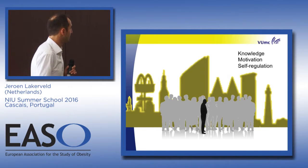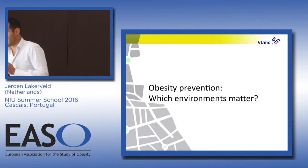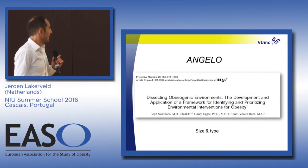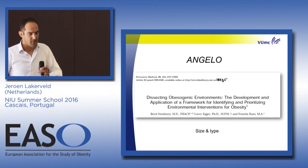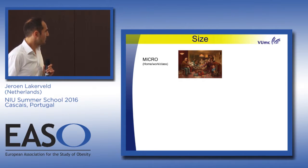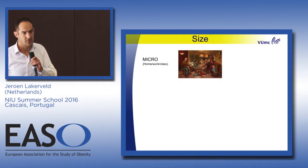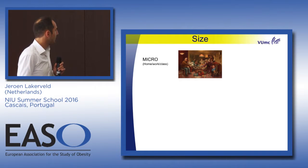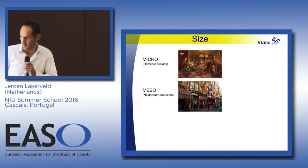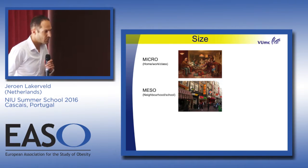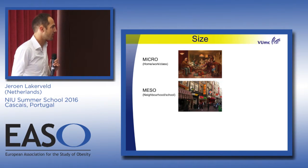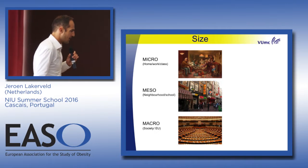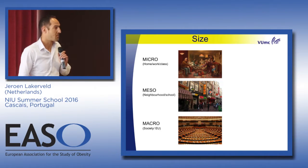These factors interact closely with each other, making the whole complex system. Which types of environments are there? The Angelo framework, by Boyd Swinburn, dissects the environment by type and by size. You have the micro environment — the in-house or work environment. Then the meso environment — the neighborhood, what's available near your work or school. And the macro environment — what exists at the political, European, or global level.